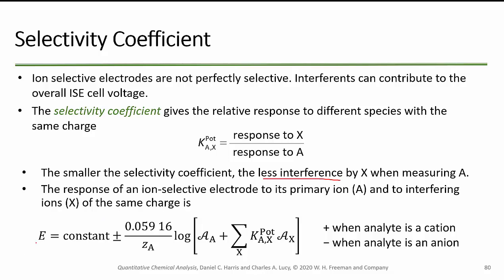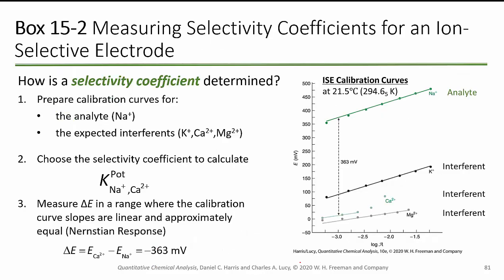The response of an ion selective electrode to its primary ion A and to interfering ions X with the same charge is going to look like this Nernst equation again. We've got some constant, plus or minus Z for the charge, and the log of the activities, then the sum of the selectivity coefficients of all interfering species X times the concentration of those interferences. It could be either positive or negative depending on whether the analyte is a cation or an anion. To determine the selectivity coefficient, you prepare calibration curves for the analyte — say sodium — and expected interferences like potassium, calcium, and magnesium, and measure the change in potential where the calibration curve slopes are linear and approximately equal.